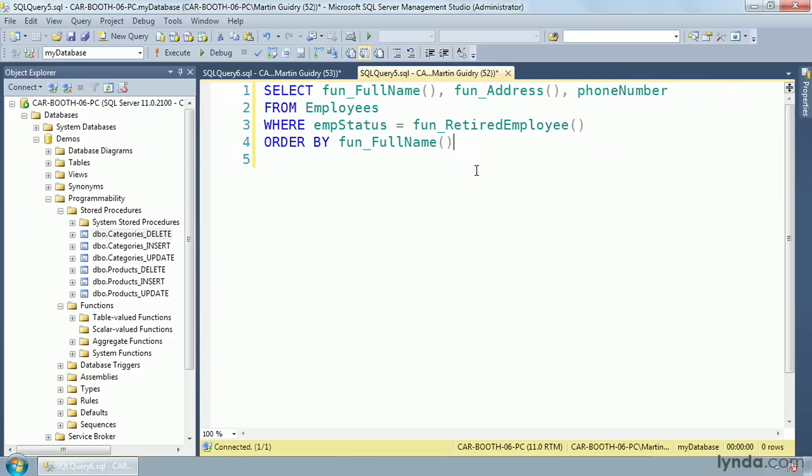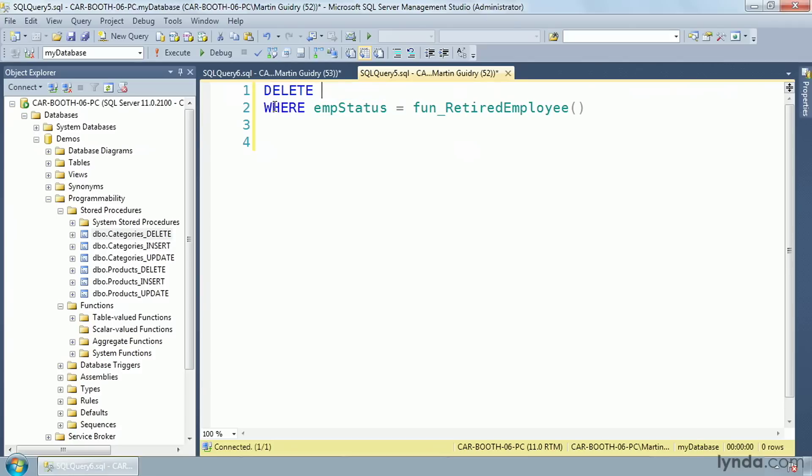These are all functions that return scalar values. It's also possible for a function to return an entire table, and that would replace the table name here. We're not limited to just SELECT statements. We can also do the same thing with UPDATE, INSERT, and DELETE statements, something like this where we're using a function to filter a DELETE statement.